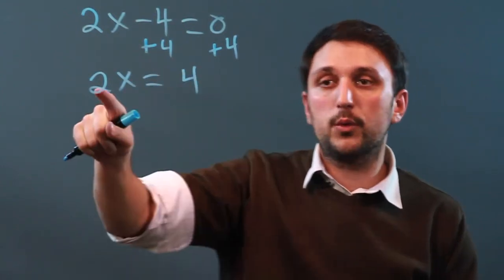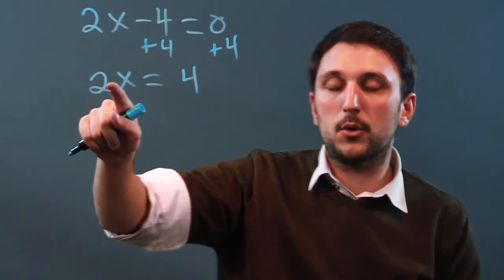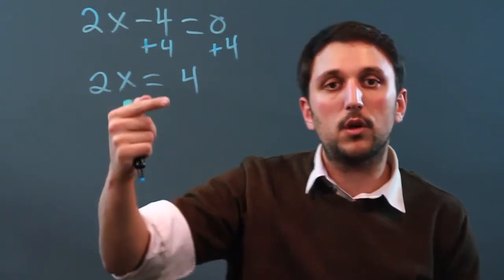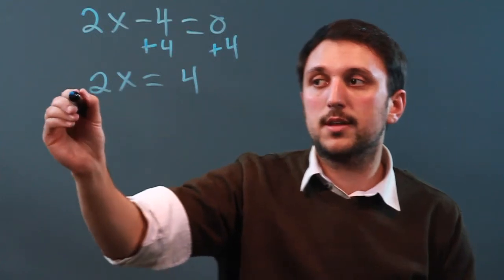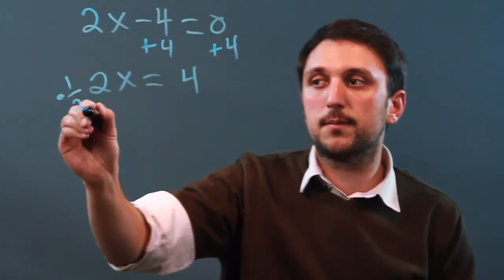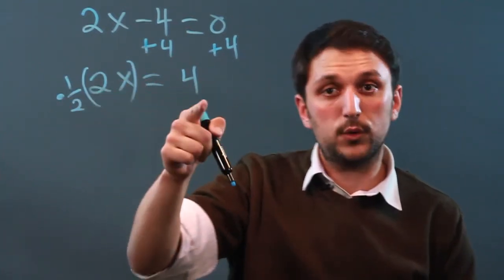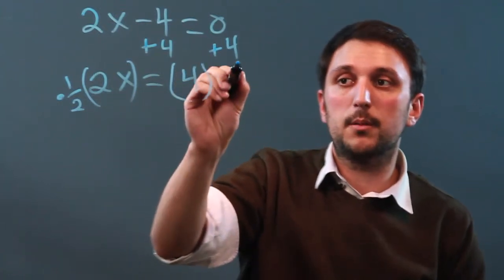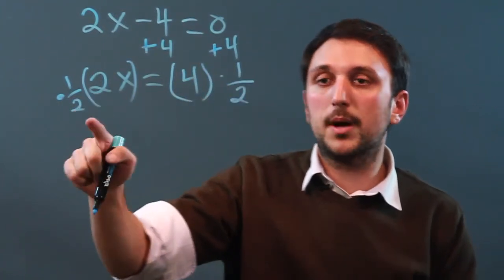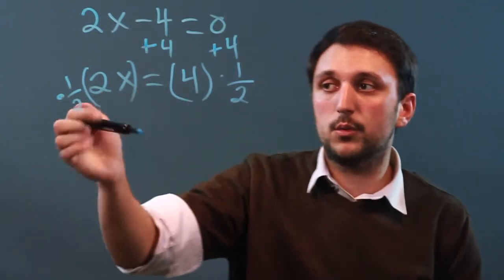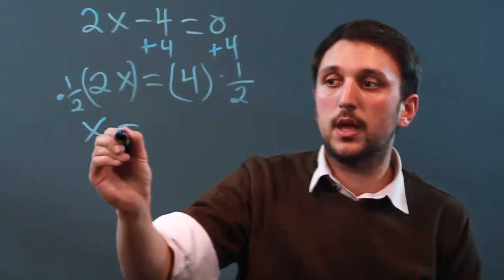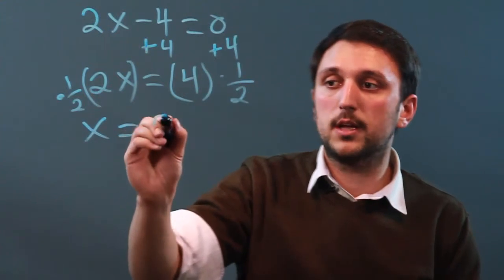Now, if we want to get rid of the 2, we have to multiply by the opposite, which is also called the multiplicative inverse of 2, which is times 1 half, but we also have to do that over here, times 1 half. So by multiplying by the opposite, or multiplicative inverse, of 2, we get x, and 4 times 1 half is 2.